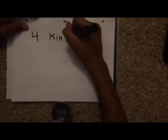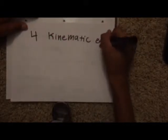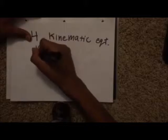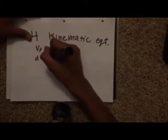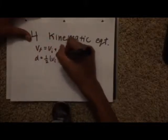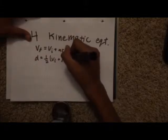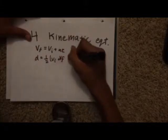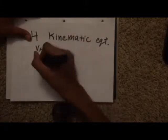The four kinematic equations go as follows. We have final velocity equals initial velocity plus acceleration times time. Second is distance equals one-half final velocity plus initial velocity times time.